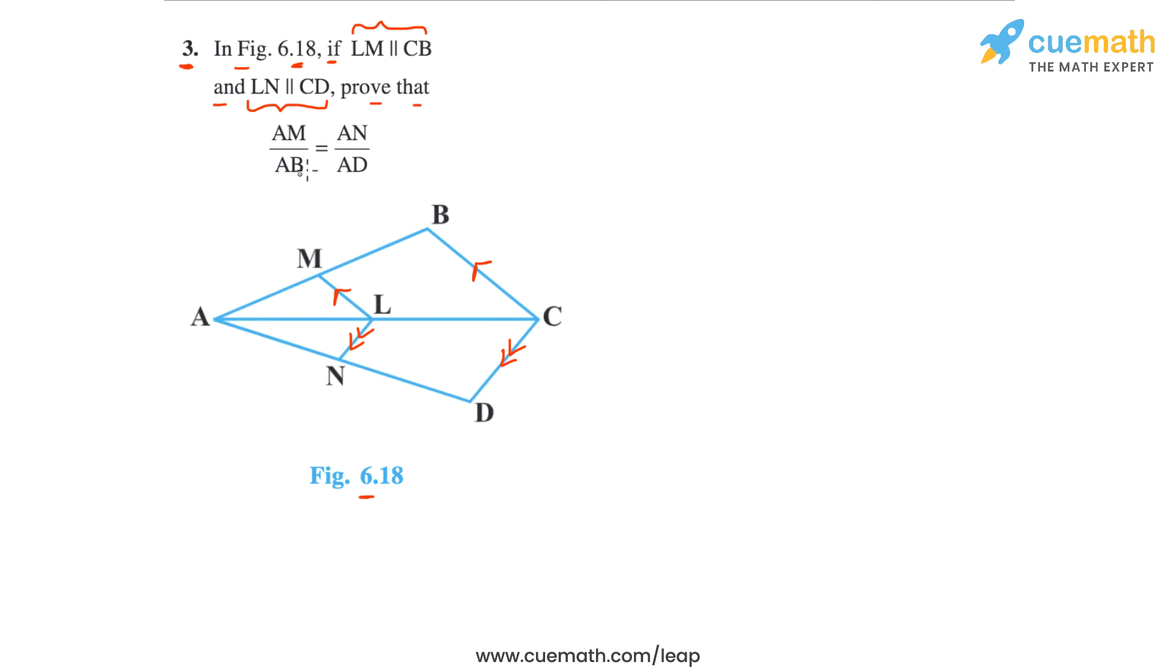Then prove that AM by AB, observe this ratio in the figure carefully, AM by AB is equal to AN by AD.